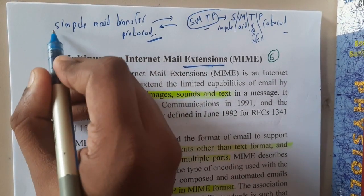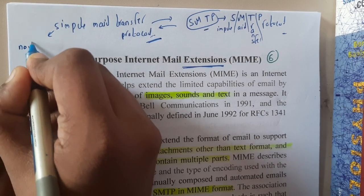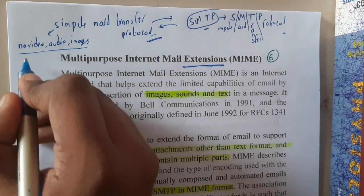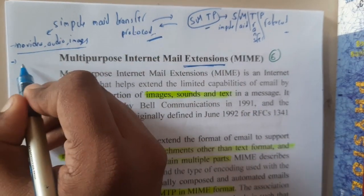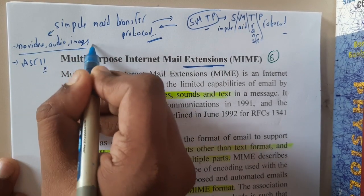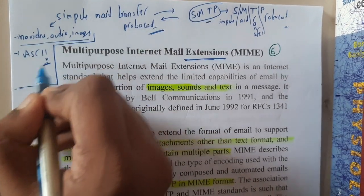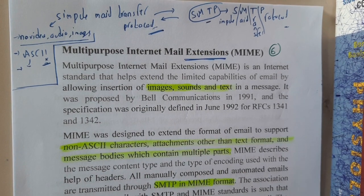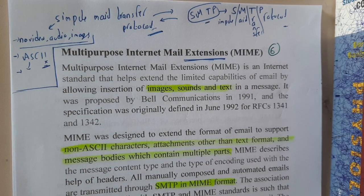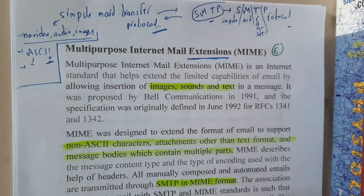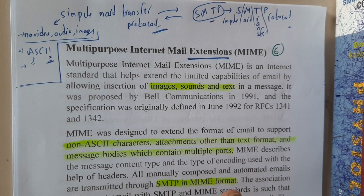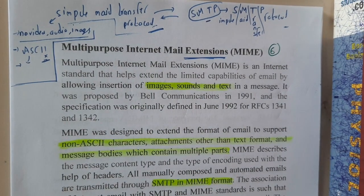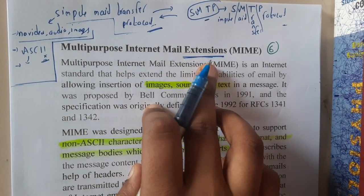The drawbacks of SMTP are: you cannot send videos, audio, or images. The major drawback is that non-ASCII values cannot be sent. For languages like Chinese, Japanese, Urdu, Hindi, or Telugu, we don't have ASCII values — only for English. That is the reason why Multipurpose Internet Mail Extension was introduced, as it works on top of SMTP.